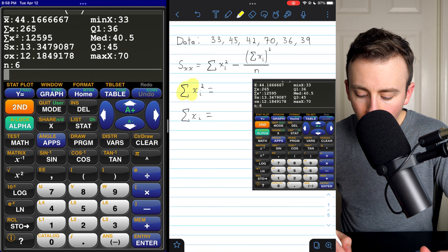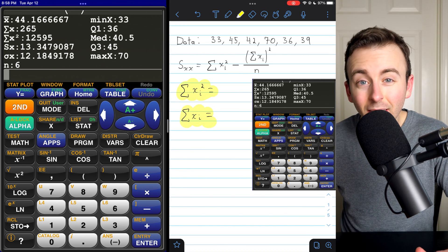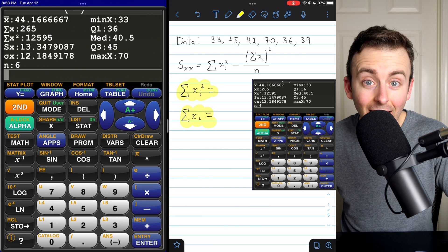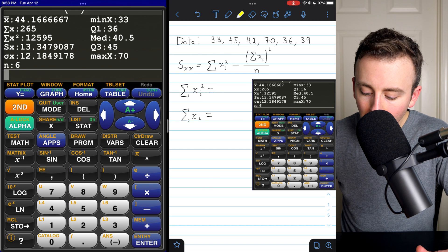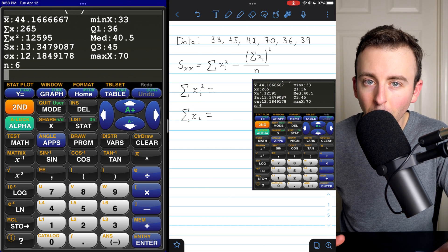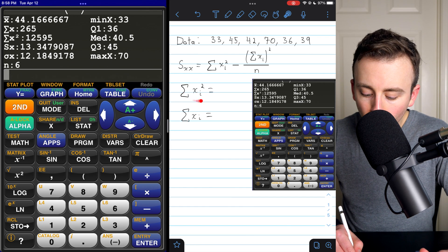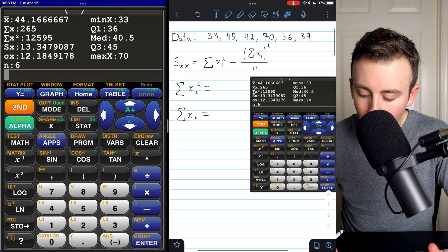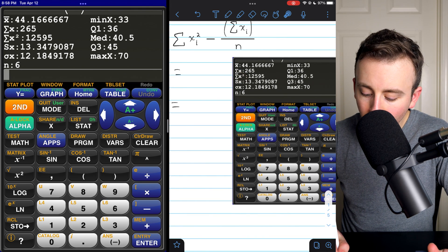Okay, here are the two things we need from the calculator in order to calculate SXX, because the calculator doesn't give us SXX up front. We do have to use this formula. And I've copied the calculator's output over here, just so I can use my red pointer to point at stuff on it. So where is the sum of the squares of our data values on the calculator? It's simply right here, sigma X squared.